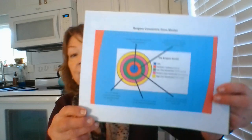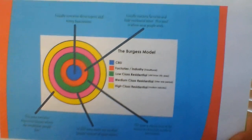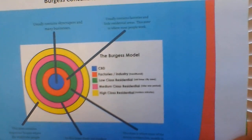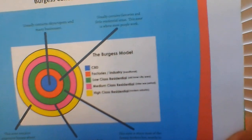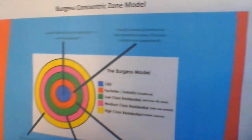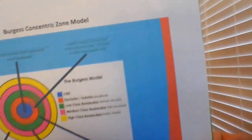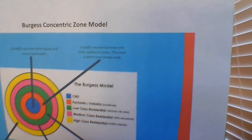The first model is the Burgess concentric zone model, developed by Ernest Burgess in 1925. We call it the concentric ring model. It's important to know the names of the people who originated these models. You see a series of concentric rings coming out from the center, corresponding to different types of land use. In the very middle is the central business district — the blue circle — where skyscrapers and businesses are located.